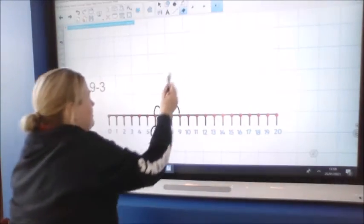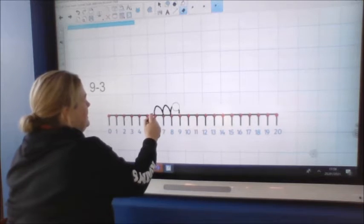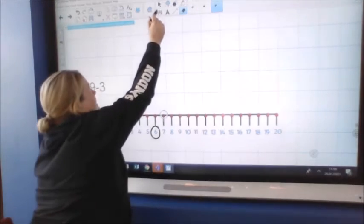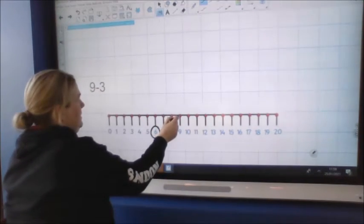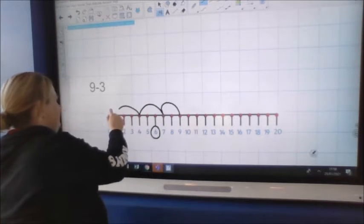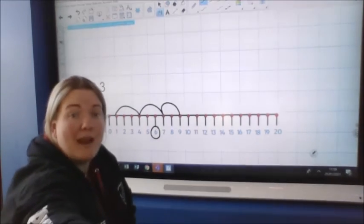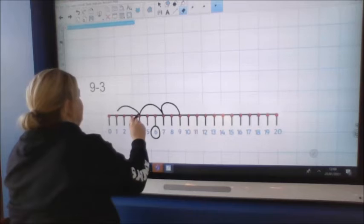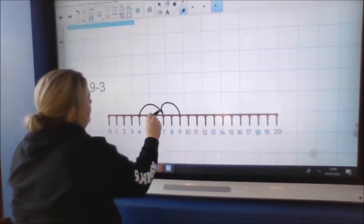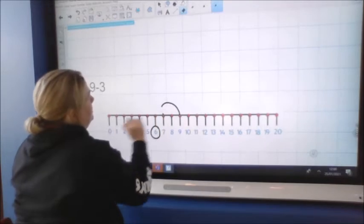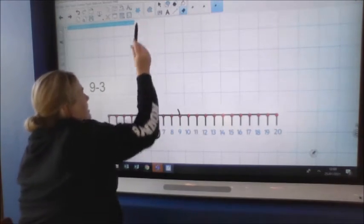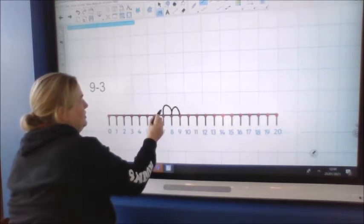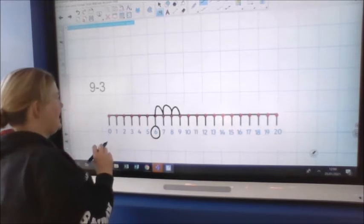What I shouldn't see, let me show you. Let's just delete this. What I shouldn't see is this. One, two, three. Because it's not going to give us the correct answer. So it's really important that we stay jumping on each dot as we go. So let's just have another go. So nine and we're taking away three. One, two, three.